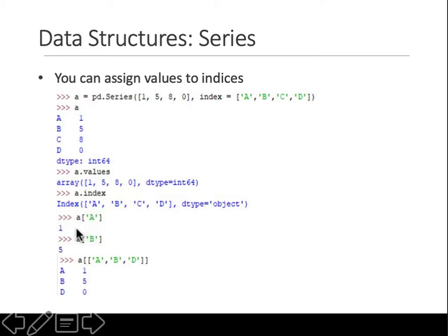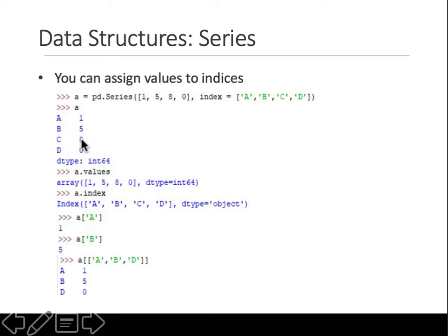Similar to lists and arrays, to get a specific member you give the series name and in square brackets put the index. Since the indices are already labeled you can give the label as well. For example, go to this series and get label 'a' — answer is 1; get label 'b' — answer is 5. You can also select multiple labels; if you omit 'c', then only those values for a, b, d are shown.